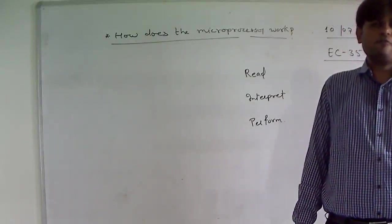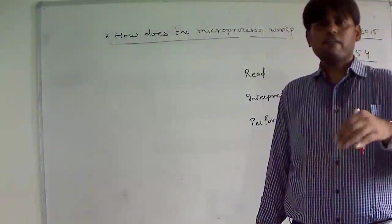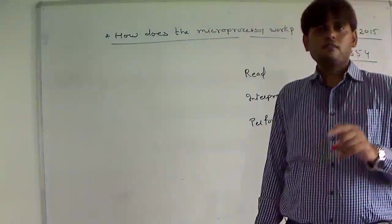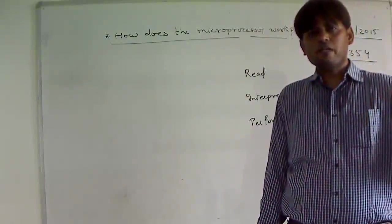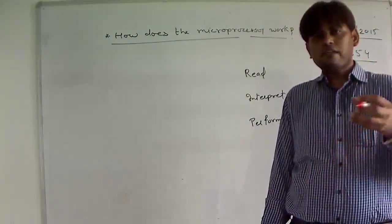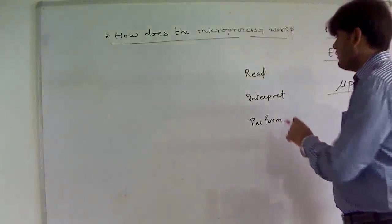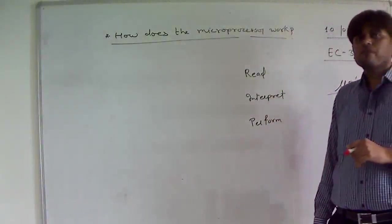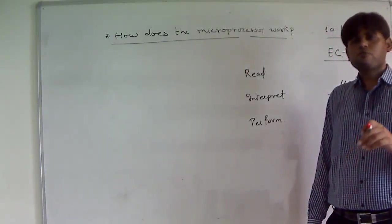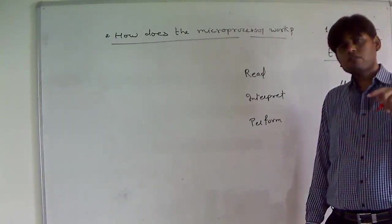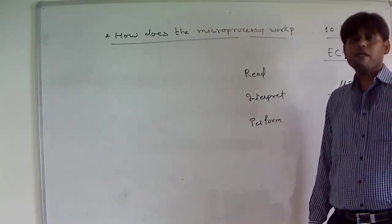There are three steps: read, interpret, and perform. This is done continuously until all the steps are finished and the radio kit is assembled. The same is the case of the microprocessor. Assuming the binary instructions are stored in memory, the microprocessor reads the binary instructions from memory, decodes them — meaning it interprets those binary instructions — and performs depending on the binary instructions read from memory.